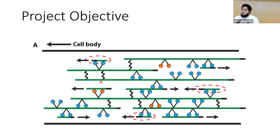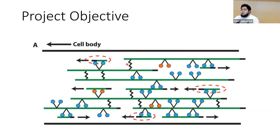The objective of this project is to test how a specific cross-linker protein affects the uniform polarity pattern in the axon. The purpose of the cross-linker protein is to prevent sliding forces from occurring. We will be testing two specific cross-linkers: anti-parallel and parallel. The system will also contain both molecular motor proteins: dynein and kinesin.